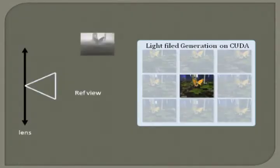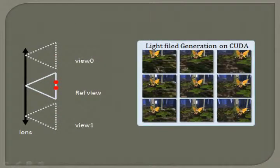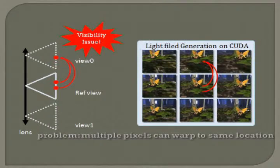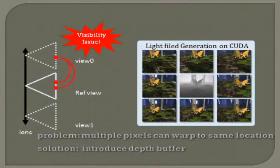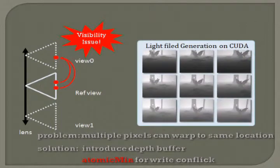Starting from a reference view and its depth map, a naive approach directly warps every pixel onto the light field cameras. However, in a typical scene, multiple pixels can warp to the same location in the synthetic view. We solve this by warping the depth values instead and use CUDA's atomic operation to resolve parallel write conflicts. This produces a sampled depth map light field.